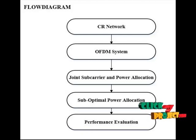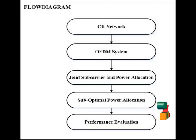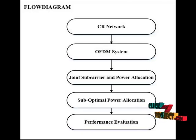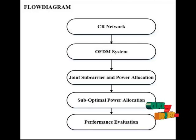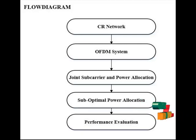Joint carrier and power allocation, along with suboptimal power allocation schemes, are discussed in this paper. In the optimal scheme, the system constructs optimal power using Lagrangian parameters, which is complex. The complexity of the system is reduced by using joint carrier and power allocation schemes.